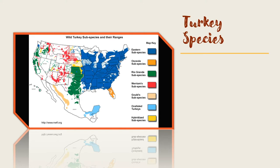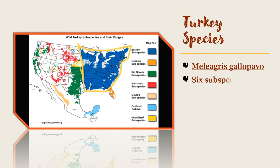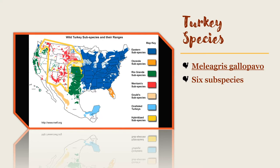All wild turkeys are in the genus and species called Meleagris gallopavo. There are a total of six subspecies, and they are the eastern, Osceola, Rio Grande, Merriam's, Gould's, and the Ocellated turkey.